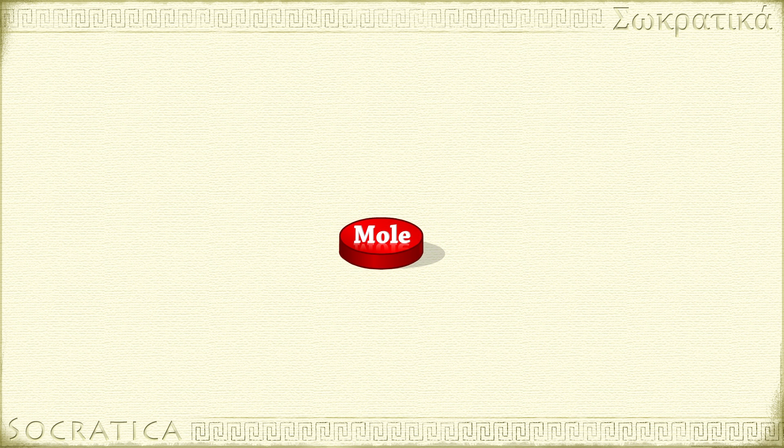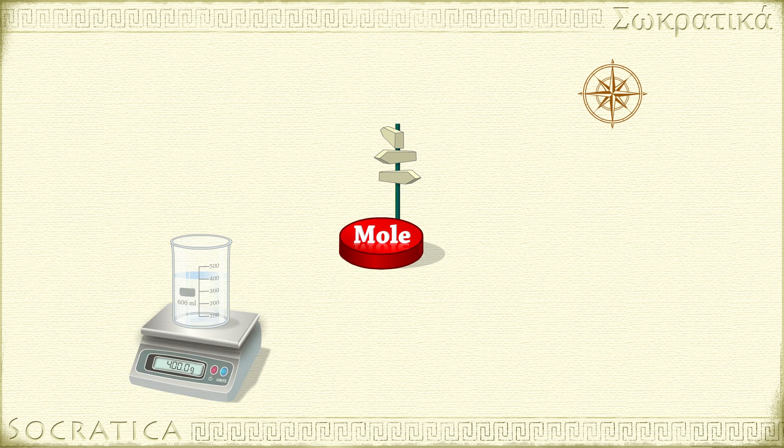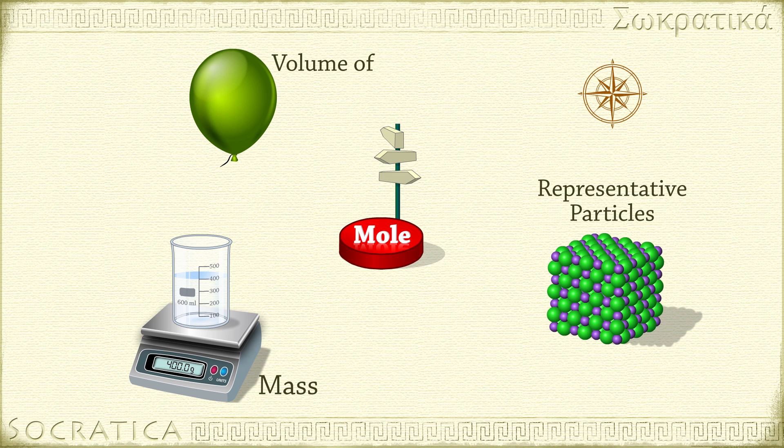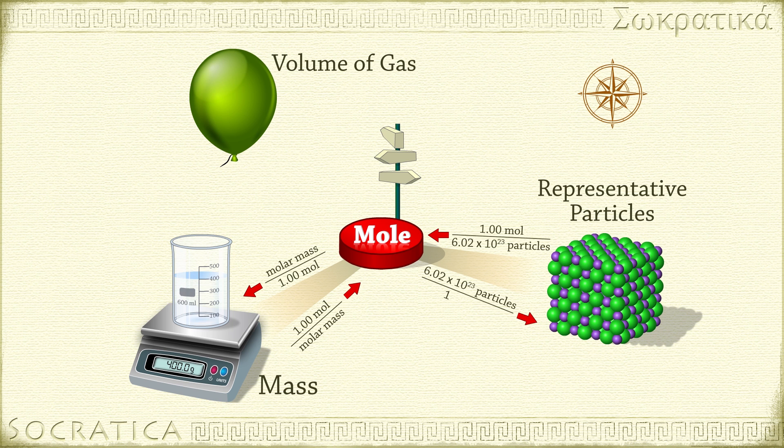Based on our experience with these examples, we can draw a map that relates all these kinds of conversions. To go from mass to moles, or moles to mass, use the molar mass, grams per mole. To go from the number of particles to moles, or moles to number of particles, use Avogadro's number, 6.02 times 10 to the 23rd particles per mole. To go from the volume of a gas to moles, or from moles to the volume of a gas, use 22.4 liters per mole. Remember, this one only works for a gas at STP.